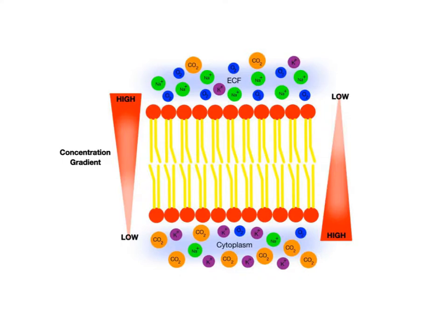For example, there are more sodium ions in the ECF compared to the cytoplasm. So we say there is a concentration gradient of sodium ions ranging from high to low concentration across the plasma membrane.